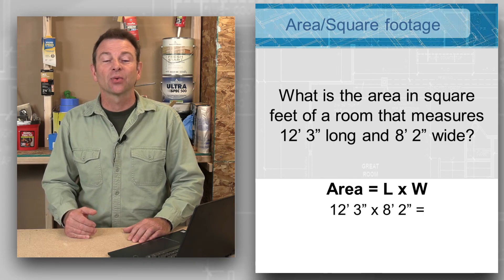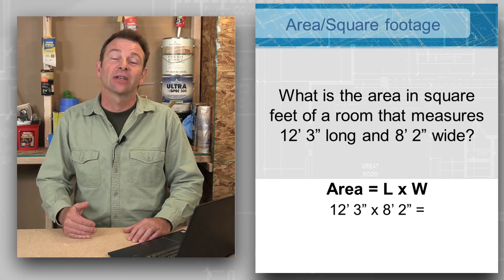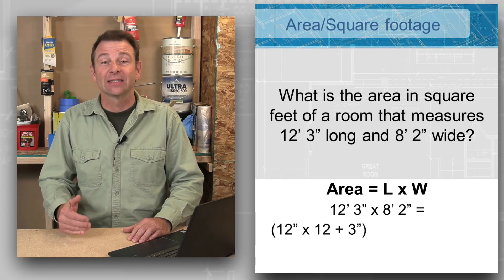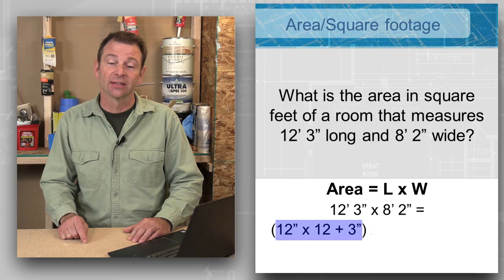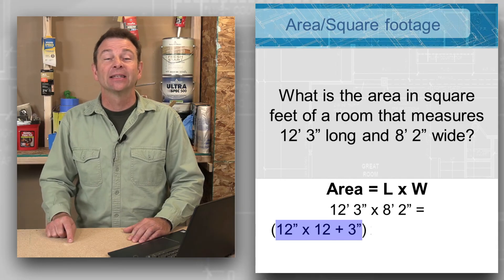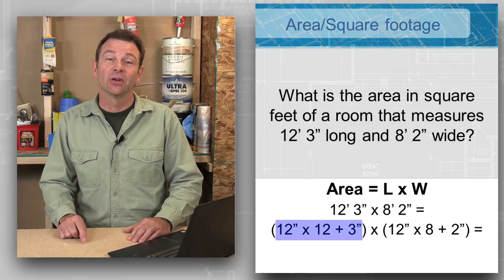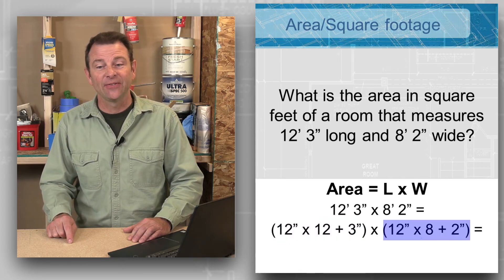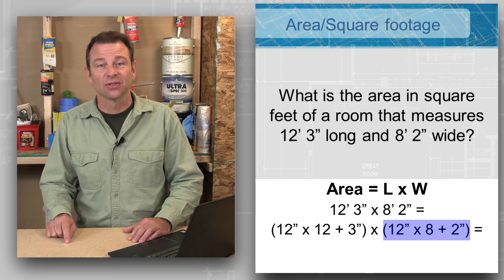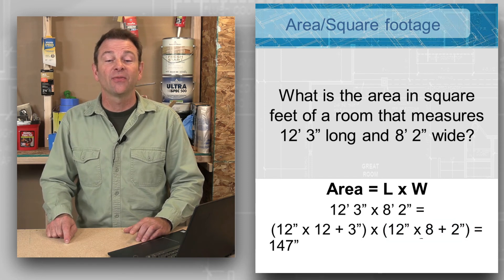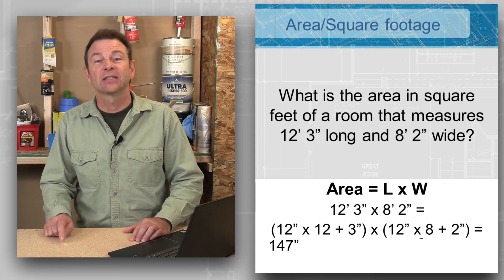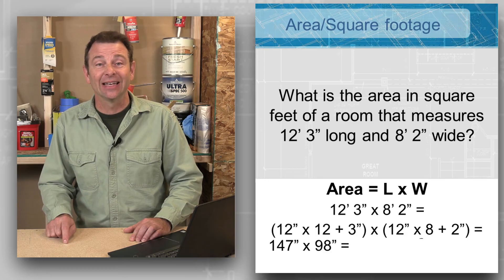So we can take our 12 feet and calculate the inches. That would be 12 inches times the 12 feet, then add the three inches to it. So 12 foot 3 inches, and then we're going to multiply that times our second dimension, which is going to be 12 inches times our 8 feet plus the extra 2 inches. So our first dimension or measurement is going to be 147 inches, and our second dimension is going to be 98 inches.